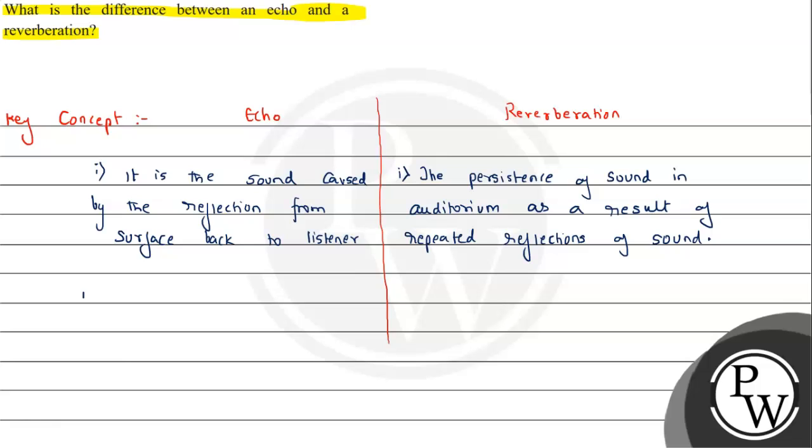Second important point - echo is a single reflection, while reverberation involves multiple reflections.